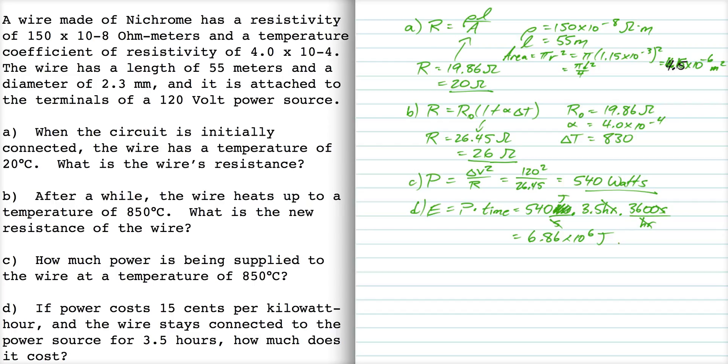And I can convert that into money by multiplying by this conversion factor given in the problem, which is that 15 cents is the equivalent of 1 kilowatt hour, and a kilowatt hour is 3.6 times 10 to the 6 joules.